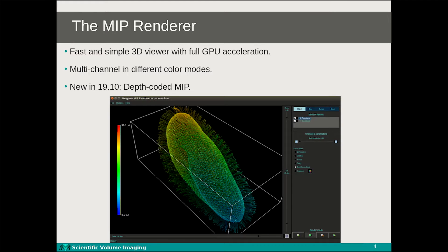Here we can see the actual MIP renderer tool. In this tool you can interactively rotate, pan and zoom your object with the mouse. Individual channels can be turned on and off and each channel can be given its own color. In the bottom right you can see an option called render mode, which sets the quality of the rendering. Setting the quality to high will make the renderings look better, whereas low quality mode will make the rendering process faster.